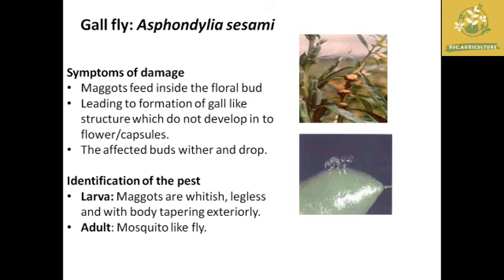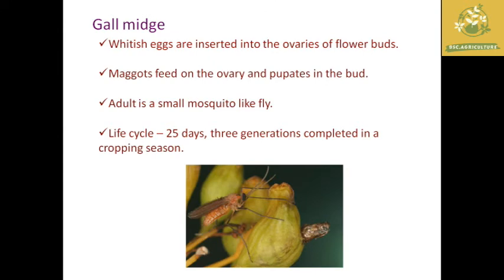The larva of the gall fly is a whitish maggot with the body tapered anteriorly. The adult is a mosquito-like fly. The eggs are whitish and inserted into the ovaries of the flower. The maggot feeds on the ovaries and pupates in the bud. The adult is a small mosquito-like fly. The life cycle takes about 25 days, and they can complete three generations in a single cropping season.